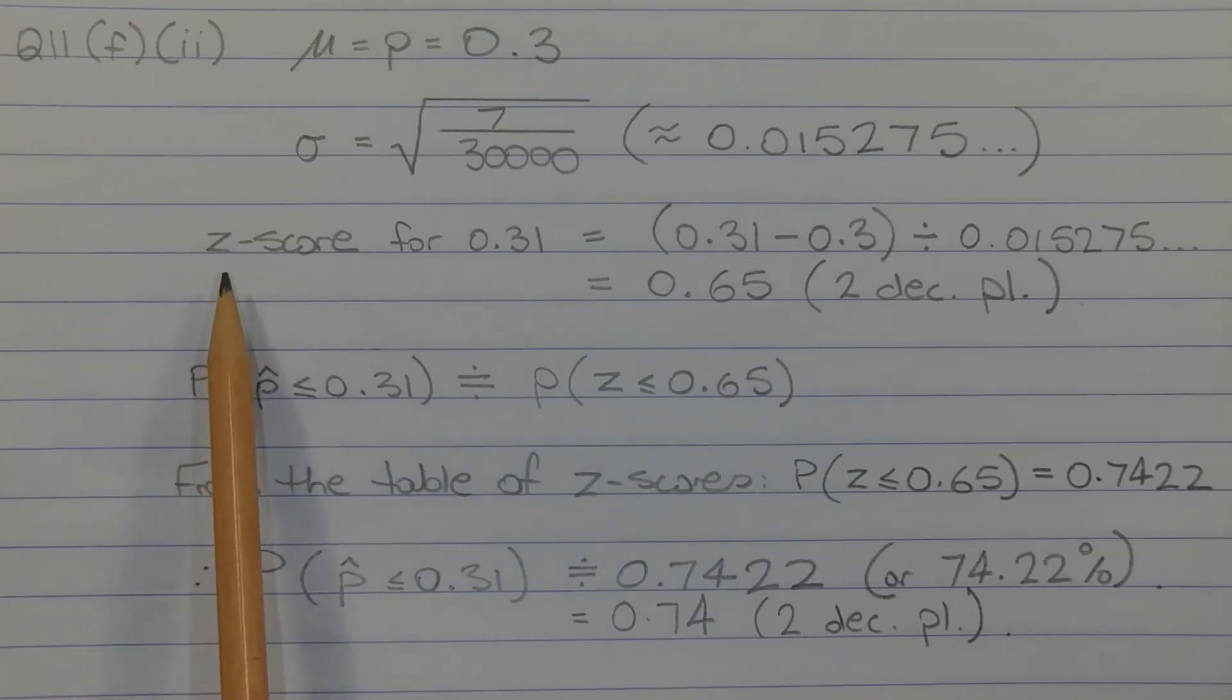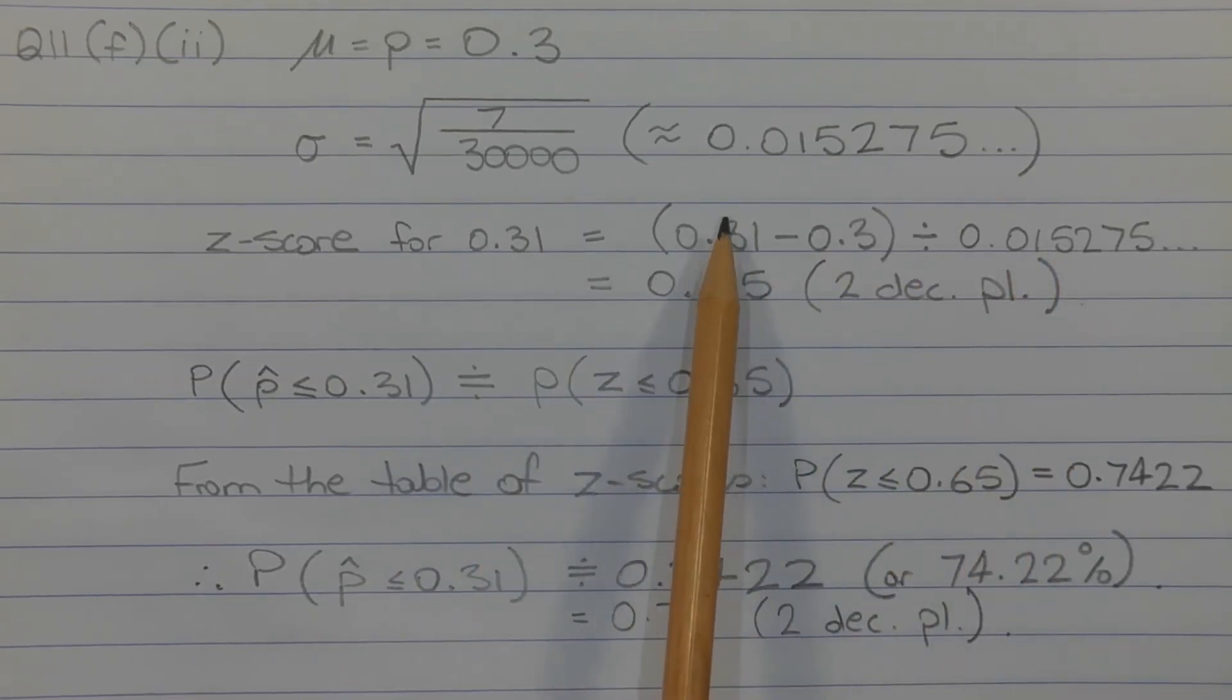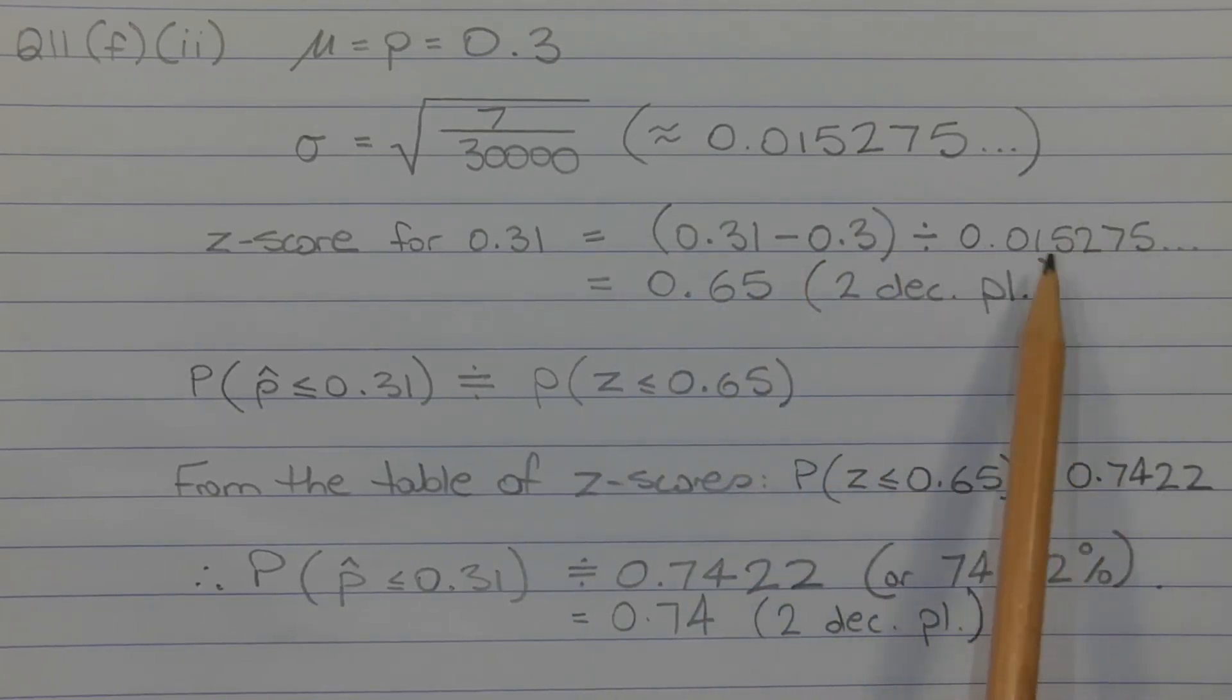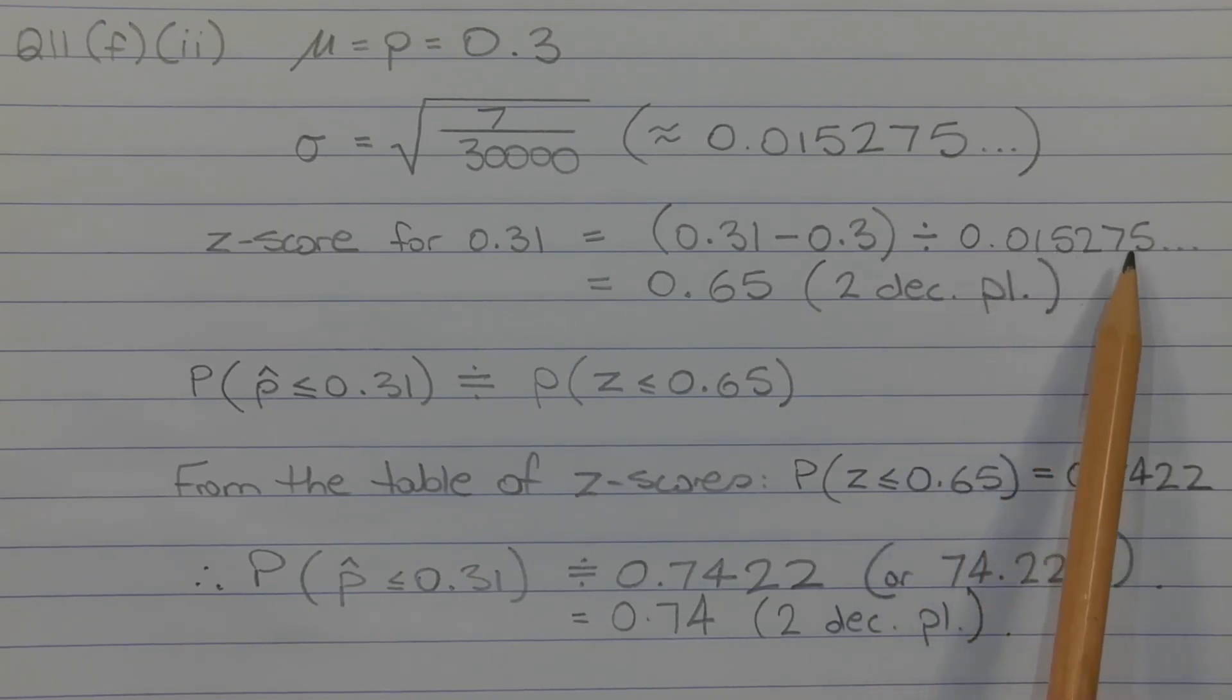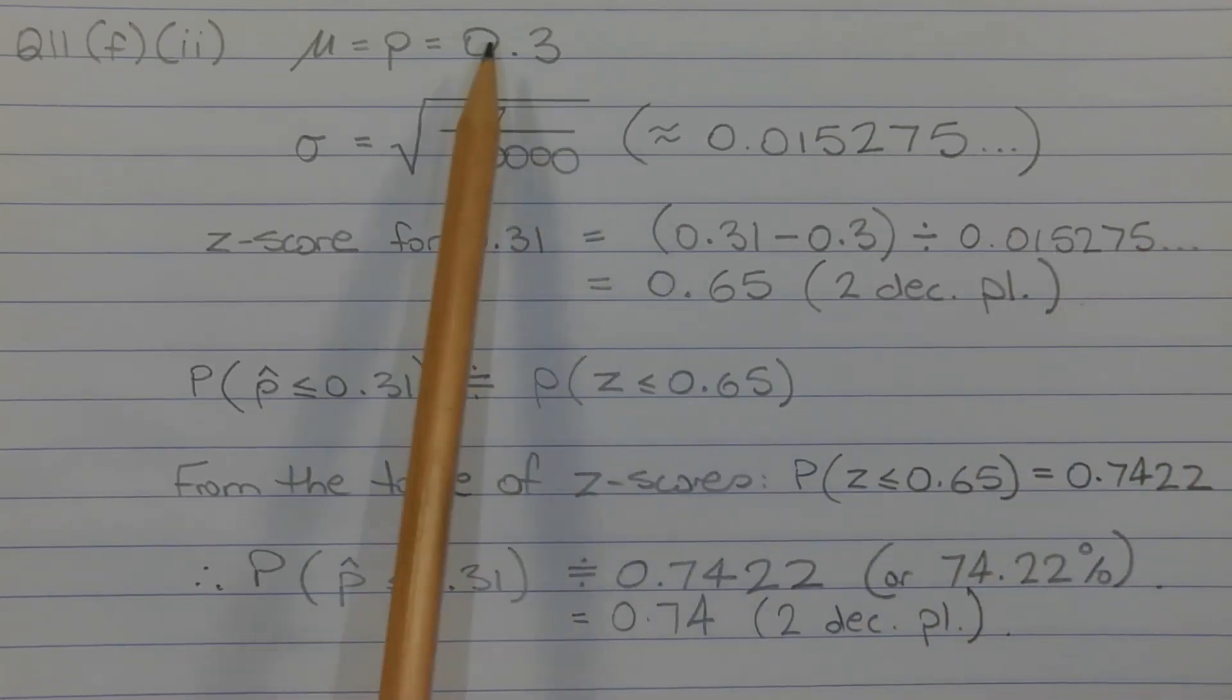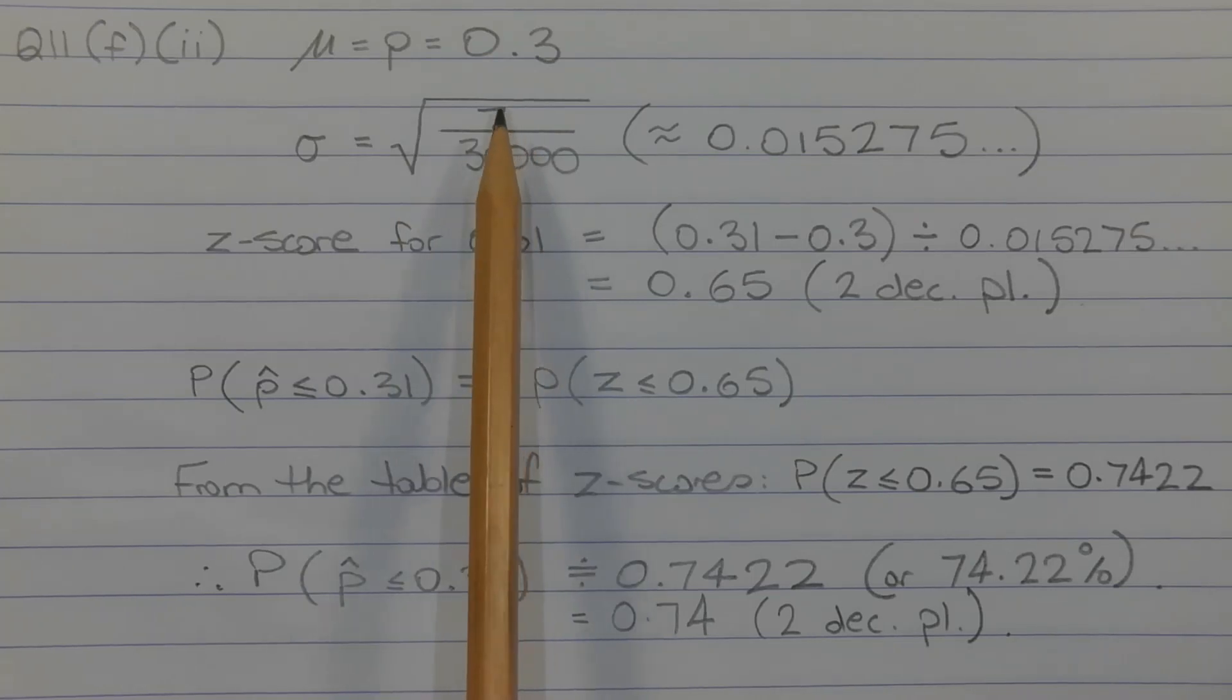Next, we need to work out the Z-score that corresponds to P-hat equals 0.31. Using the Z-score formula, that is raw score minus mu in brackets divided by the standard deviation, so that's 0.31 minus 0.3 in brackets, divided by 0.015275 and so on, or dividing by the exact value, the square root of 7 over 30,000, we get 0.65 correct to two decimal places.